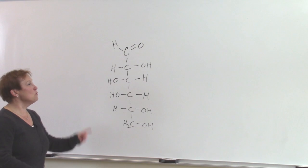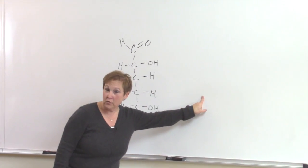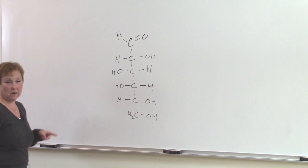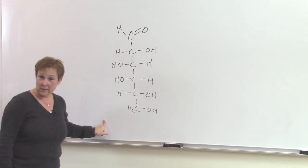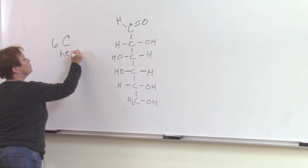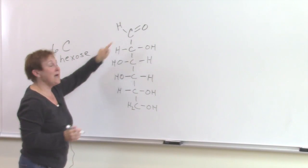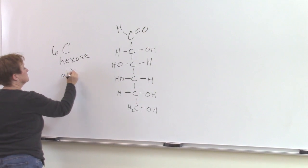All right, today we're going to go from a Fisher projection to a Haworth projection for a carbohydrate. This is a typical six carbon hexose. It is also an aldose because it has an aldehyde.